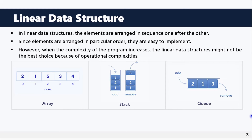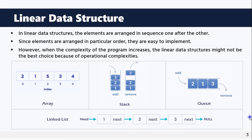Another popular linear data structure is the queue, which follows FIFO — first-in-first-out order. The first element added is the first to be removed. Unlike the stack which follows LIFO, the queue follows FIFO. There is also the linked list, where data nodes are connected through addresses.